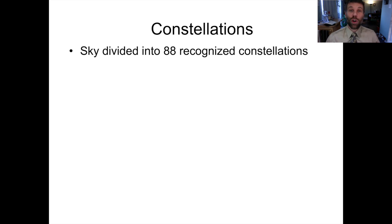The sky is currently divided into a total of 88 recognized constellations. Many of those are based on Greek and Roman mythology and were first identified by Greek and Roman scholars two to three thousand years ago, but not all of them.